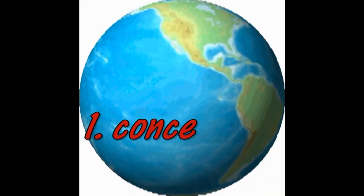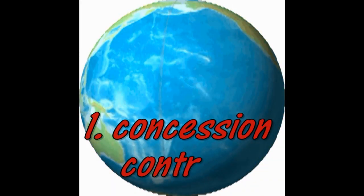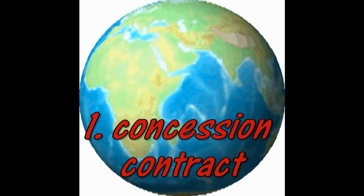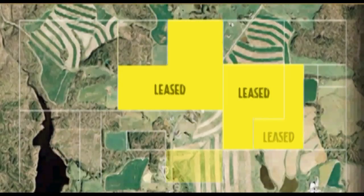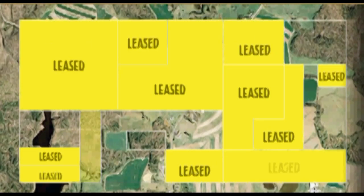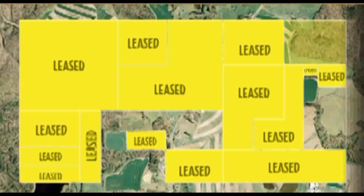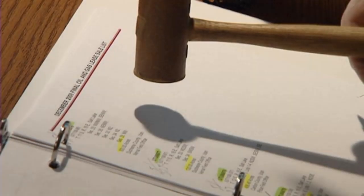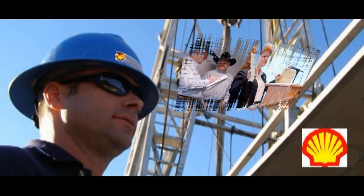A concession contract is one that has been used extensively throughout the world over the years. In this type of contract, the owners of the land give you the right to explore and produce the field, and in return, you give them a percentage of the profits. Once you have bid on a lease and it has been awarded to you, no one else can drill in the area covered by your concession while it is in effect.